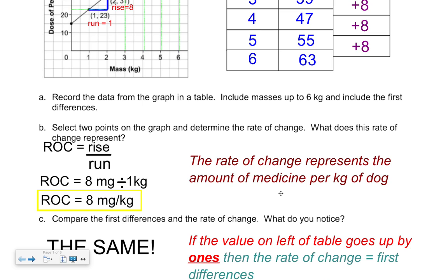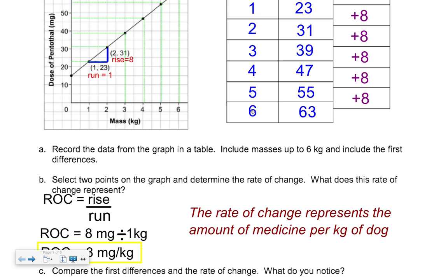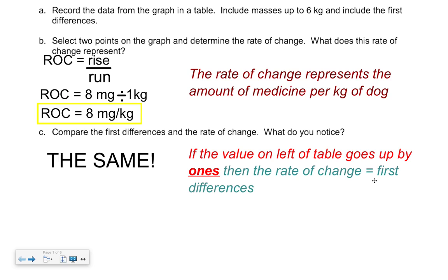This represents the amount of medicine per kilogram of dog. If you had a 20-kilogram dog and this relationship continues, you'd say: 8 milligrams per one kilogram, so for a 20-kilogram dog you just multiply by 20. You'll notice the first differences equals the rate of change in this case — and that's true if the values on the left column of the table are going up by ones. Your rate of change will end up being equal to your first differences, but that's not always the case.